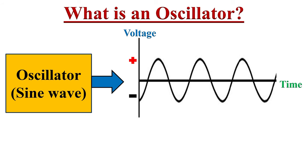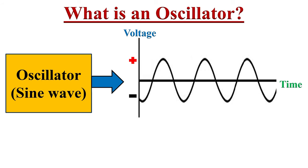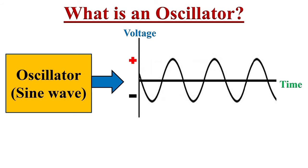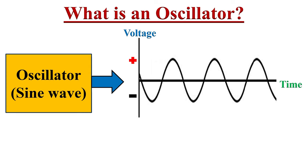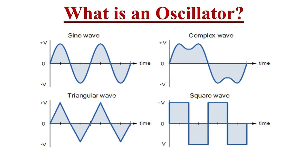Here, this oscillator is creating sinusoidal oscillations, so it is known as a sinusoidal oscillator. Oscillators can also produce non-sinusoidal waves like square waves, triangular waves, and so on.